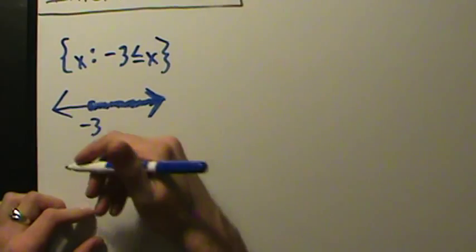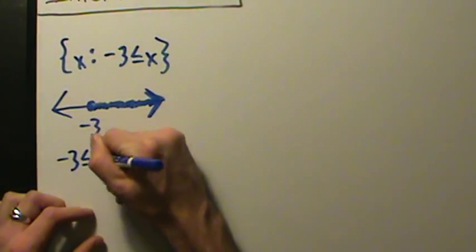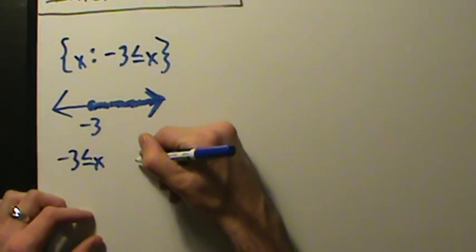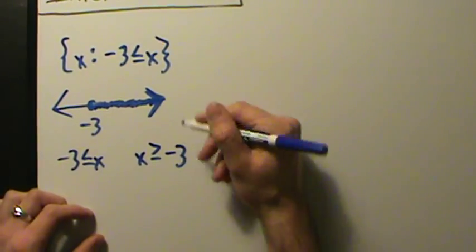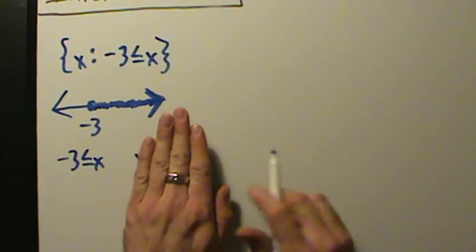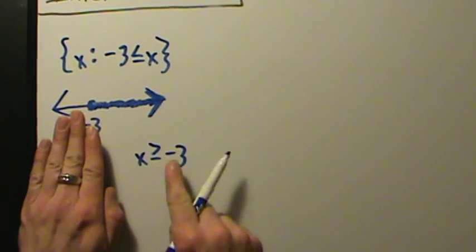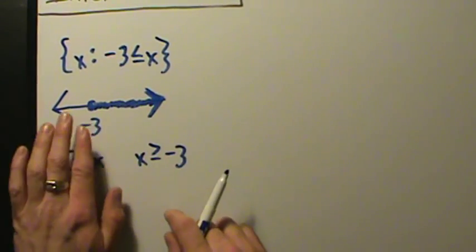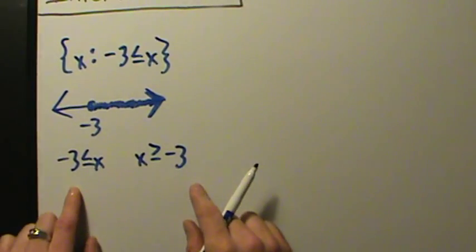We can express this as 'negative 3 is less than or equal to x,' or equivalently 'x is greater than or equal to negative 3.' Either one of these is acceptable to describe this interval using inequality notation.